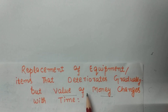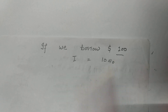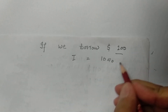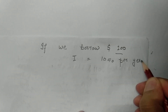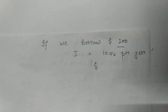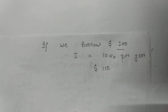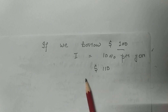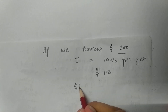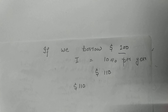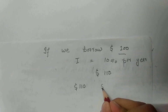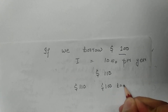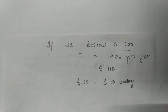Before discussing the problem I will explain the meaning of the statement 'value of money changes with time' by an example. Let us suppose that we have borrowed one hundred dollars at the interest rate of 10% per year. After one year we have to return one hundred and ten dollars, because the interest rate per year on hundred dollars is 10%. So one hundred ten dollars after one year from now are equivalent to hundred dollars today.